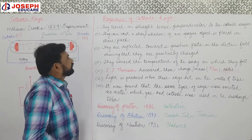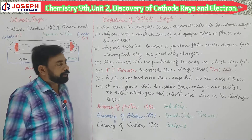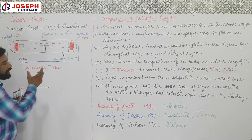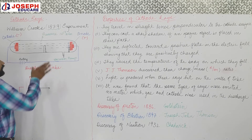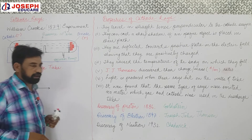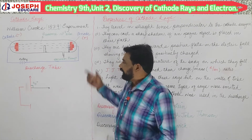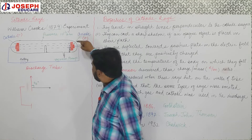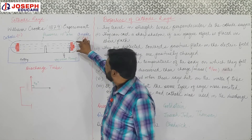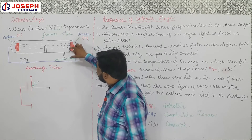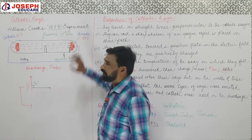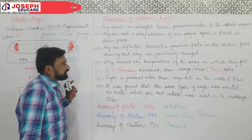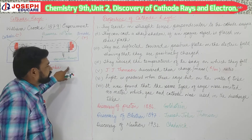Characteristic number two: they can cast a sharp shadow if an opaque object is placed in their way. This shadow property was observed when William Crookes performed this experiment. During the performance of the experiment, they observed that the anode surface acts as an opaque material, so a shadow is produced. If an opaque object is placed in the way of these rays, then a shadow is produced.